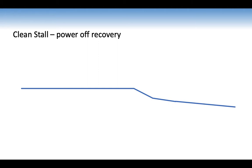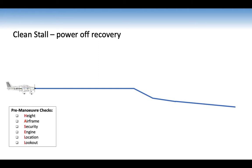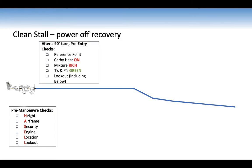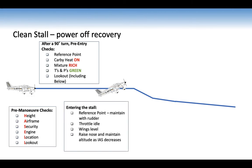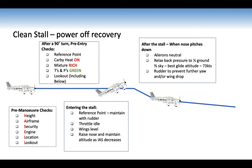Clean stall power-off recovery procedure: do your HASSLE checks, then pre-entry checks. Select carb heat off, mixture rich, T's and P's green, look out — clear right, centre, clear left, and clear below. Entering the stall: select reference point, maintain rudder, throttle idle, wings level, raise nose and maintain altitude as indicated airspeed decreases. After the stall, when the nose pitches down: ailerons neutral, relax back pressure to two-thirds ground one-third sky — best glide attitude — at 73 knots, and use rudder to prevent further yaw and wing drop.